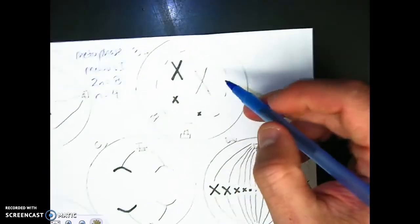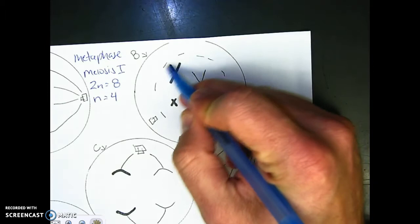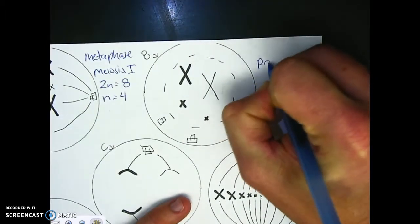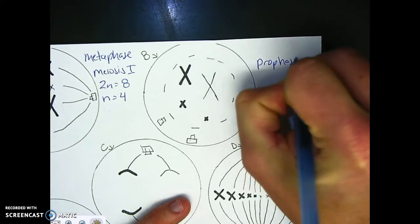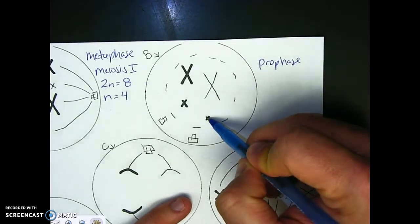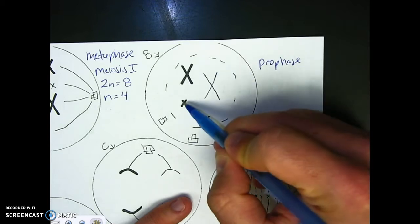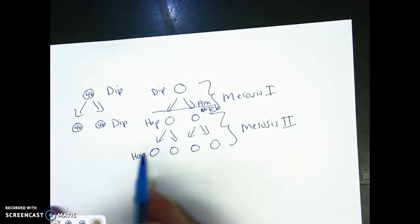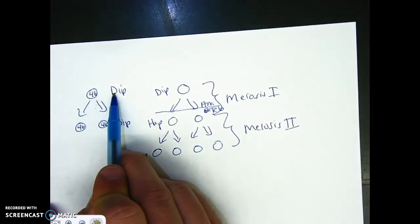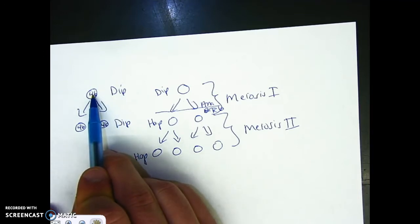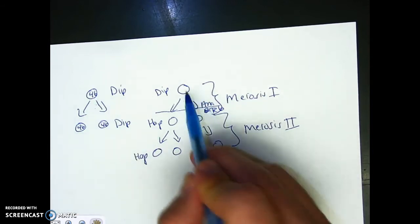Letter B cell is a prophase — I see the nuclear membrane disappearing and centrioles migrating. Now I look to see: is it haploid or diploid? Does this chromosome have its homologous match anywhere? No. So this is a haploid cell. I look back at my generic diagram: prophase of mitosis is diploid, so this picture cannot be diploid — it can't be mitosis.